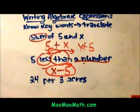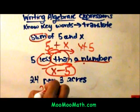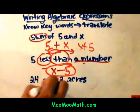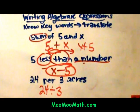Okay, and the last one is 24 per three acres. And per means division. So I'm going to have 24 divided by 3. And that's how I would write that expression.